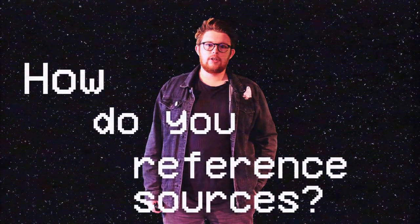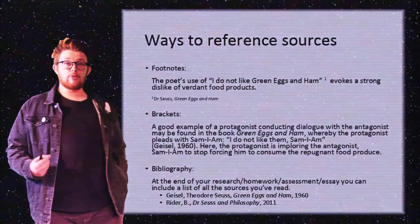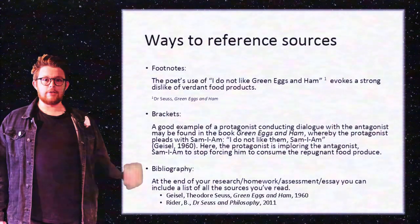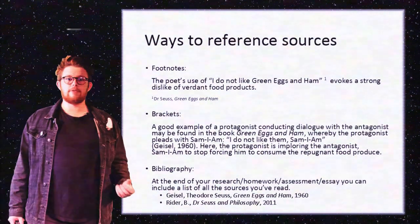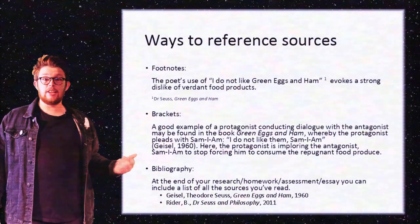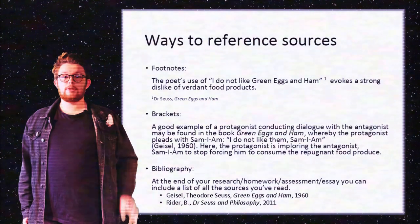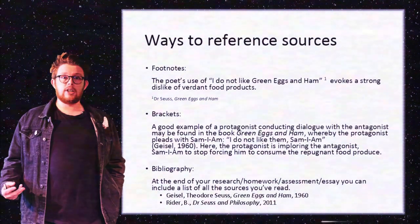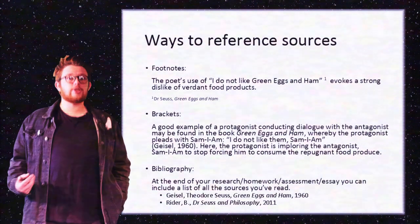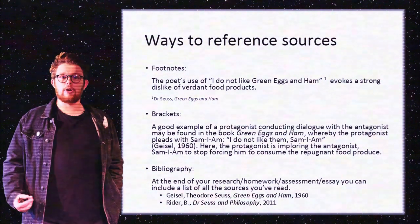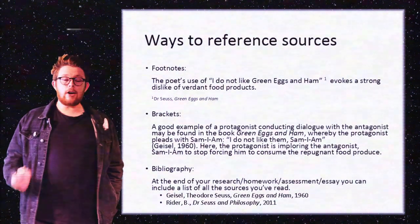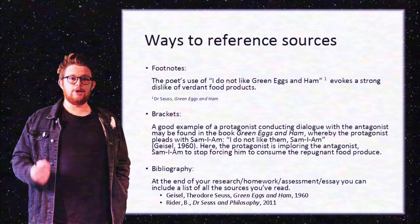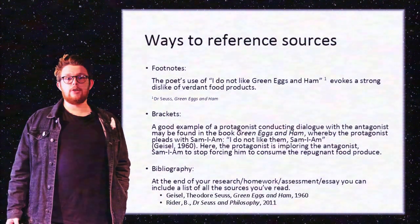So how do you reference sources? There are many different ways. Displayed behind me are just three of those ways. My favourite is footnotes, where you have a small number in the top corner using the superscript function that alerts the reader to there being a reference underneath. The second method — brackets — is a really good way to show the reader that you have referenced a specific author. Finally, if you don't want footnotes and brackets throughout your text and think it looks clumsy, a bibliography may be for you: notes at the end of your paper that show you have read a variety of sources in conducting your homework project.